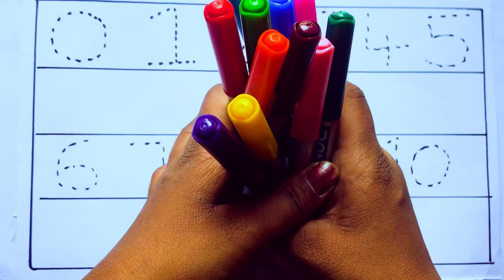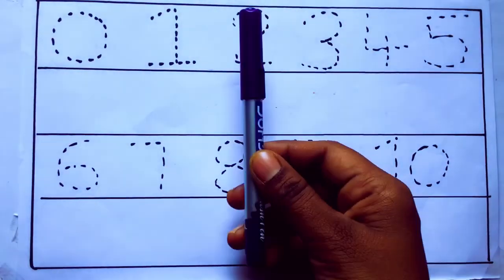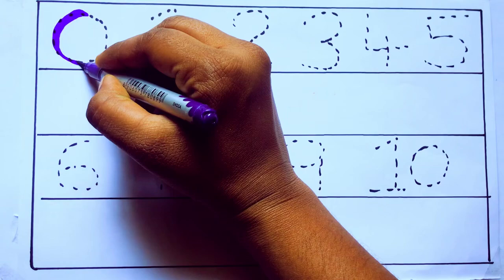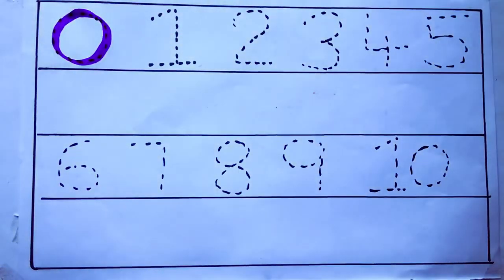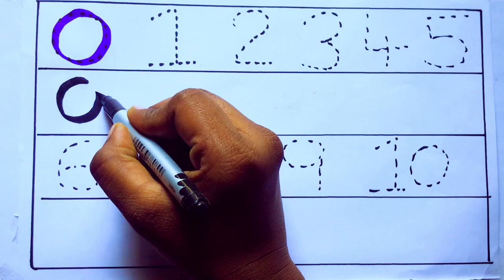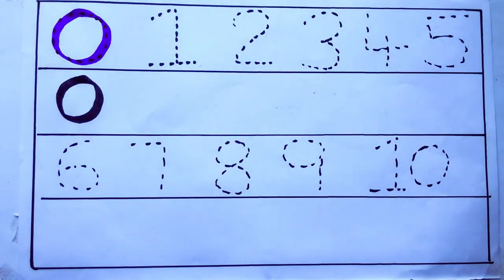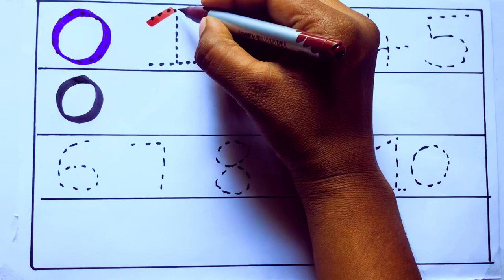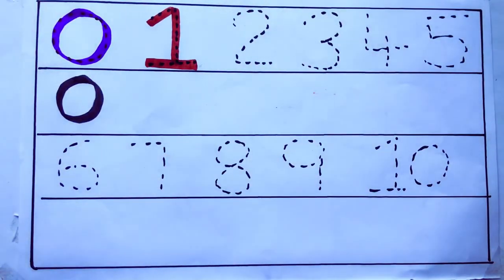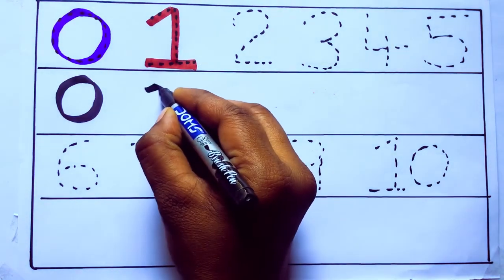Let's draw numbers. Violet color 0, Z-E-R-O. Violet color 0. 0, brown color 1, O-N-E, 1, number 1.